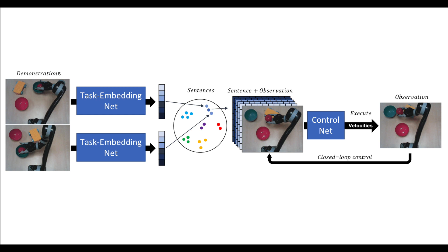We present task-embedded control networks, which employ ideas from metric learning in order to create a task embedding that can be used by a robot to learn new tasks from one or more demonstrations.